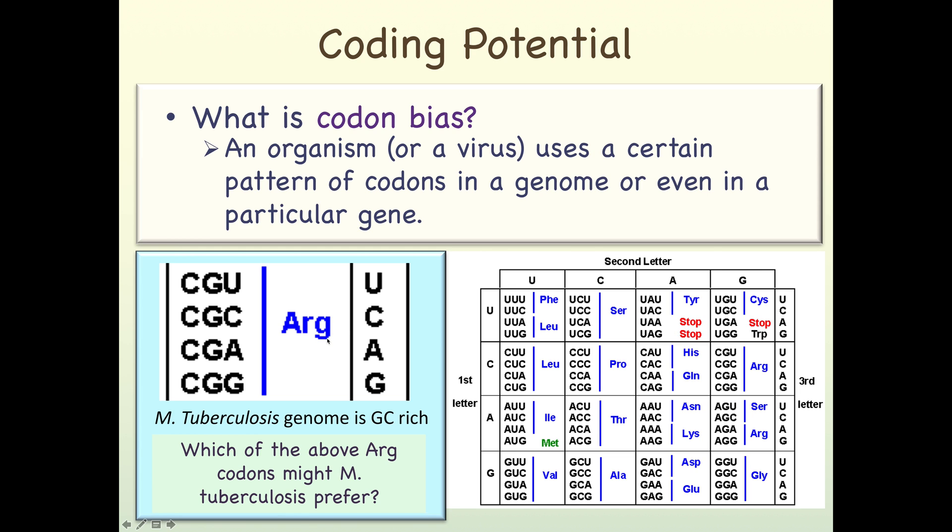For most amino acids, there's more than one codon that codes for the amino acid. A good example is arginine - arginine has six total codons that code for amino acids. Let's look at the four codons CGU, CGC, CGA, and CGG that code for arginine. M. tuberculosis genome is GC rich. So which of the above codons might M. tuberculosis prefer if the majority of the nucleotides in M. tuberculosis genome are G's and C's?